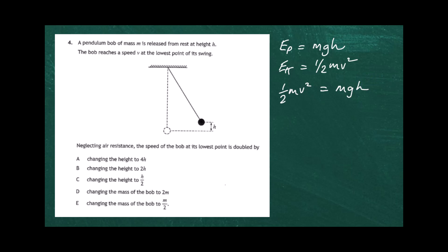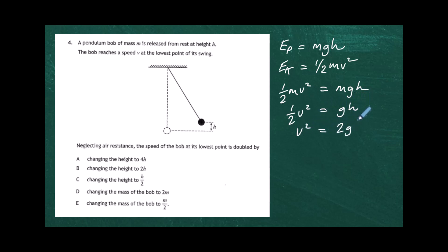We can cancel m from both sides, leaving one half v squared equals gh. Multiplying through by 2 gives v squared equals 2gh. Since 2g is a constant, we can write this as v squared equals a constant times the height h.